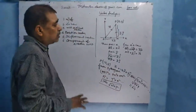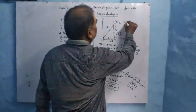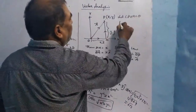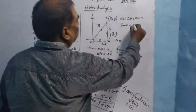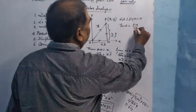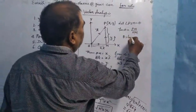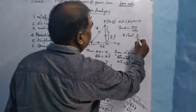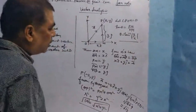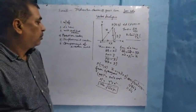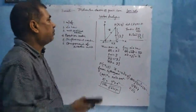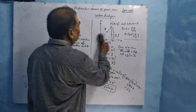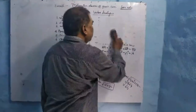We can also determine the direction of the position vector. Let angle POM equal theta. Then tan theta equals PM by OM, which is perpendicular over base. So theta equals tan inverse of y over x. The direction depends on which quadrant the point is in.